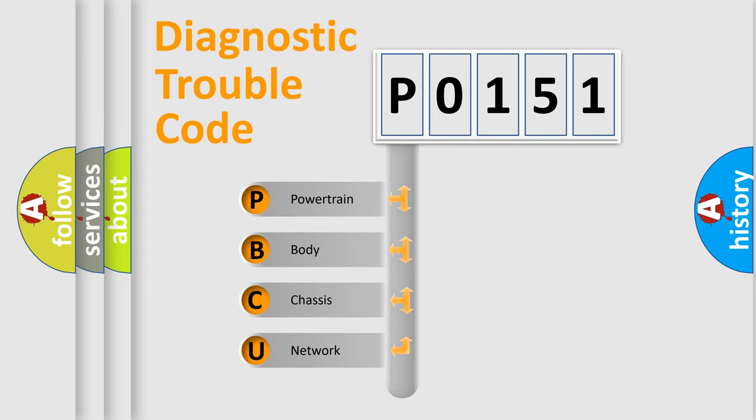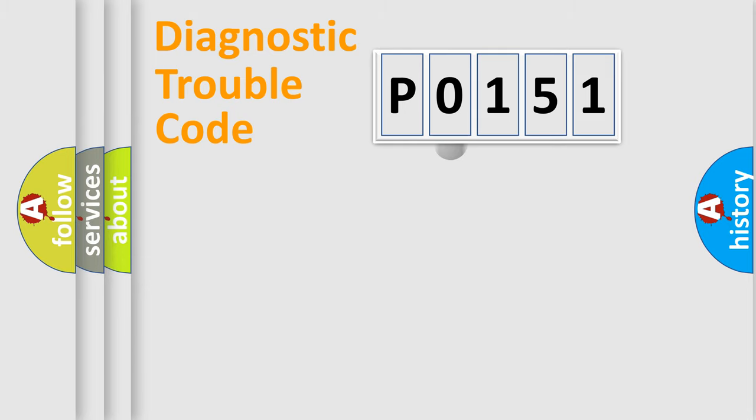We divide the electric system of automobile into four basic units: Powertrain, body, chassis, and network. This distribution is defined in the first character code.